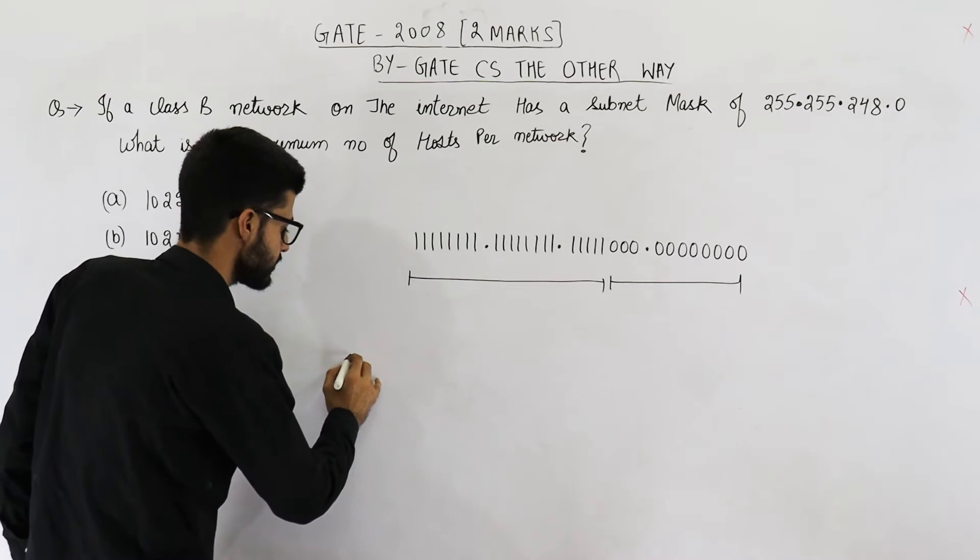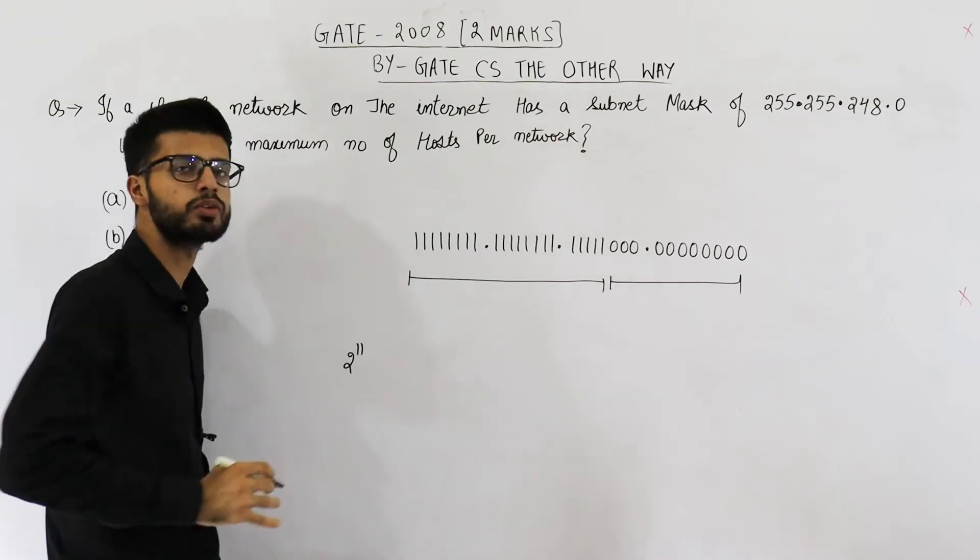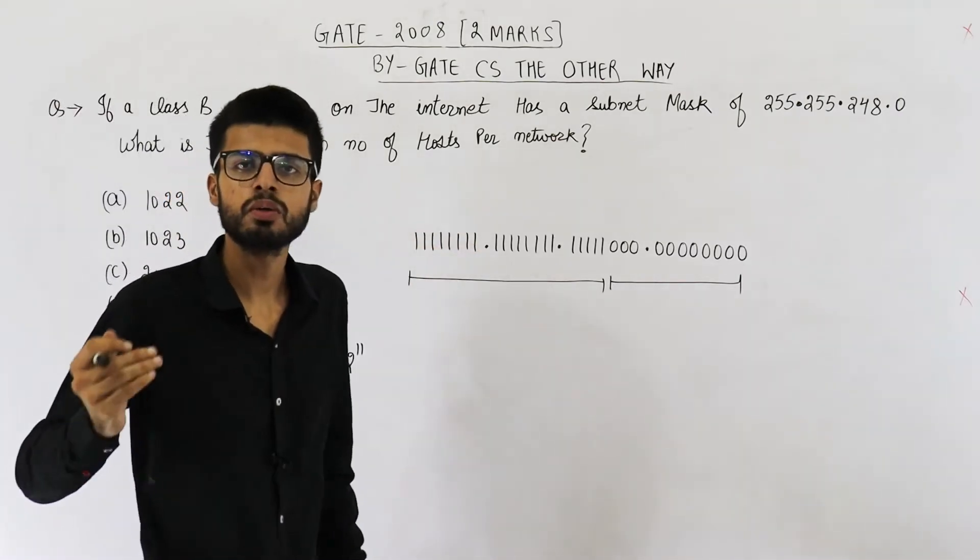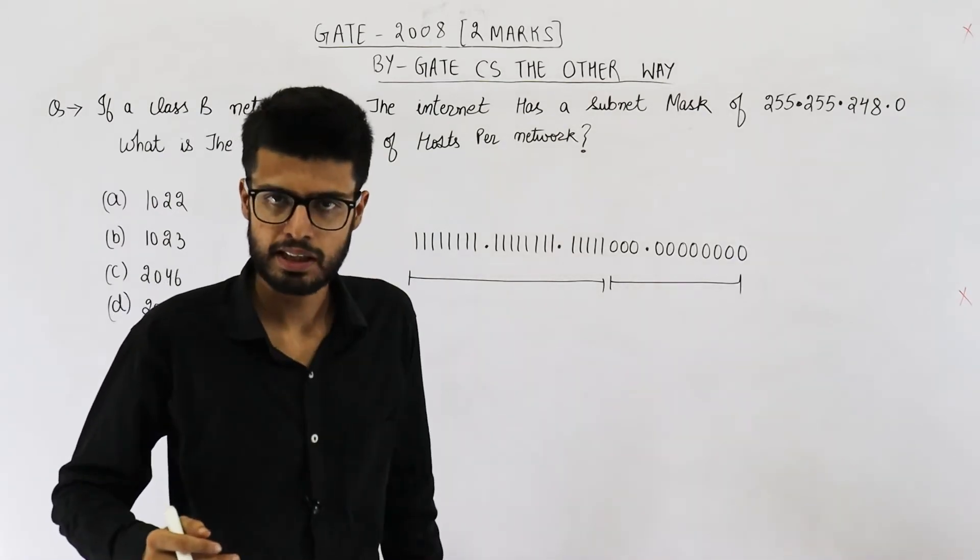we have 8 plus 3 is equal to 11 bits in the host ID. So how many IP addresses are available? That is 2 raised to the power 11. So in such a network, you are going to have 2 raised to the power 11 IP addresses.